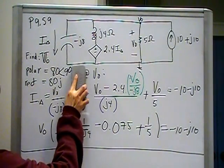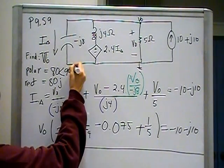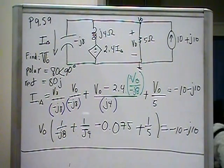So in case you guys can't see it, because I have such a small board. Again, that's 80 angle 90, the polar form, and 80J, the rectangular form.